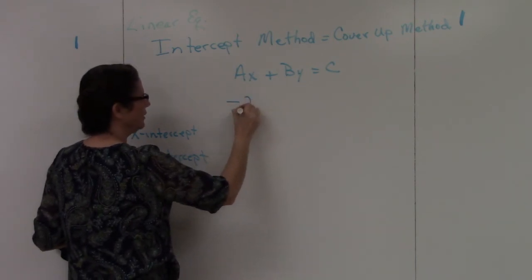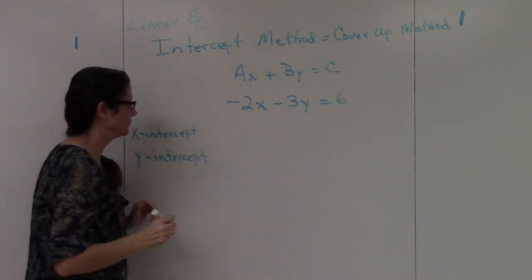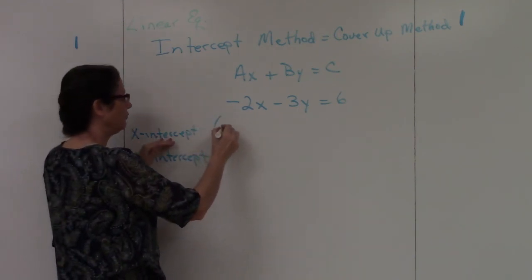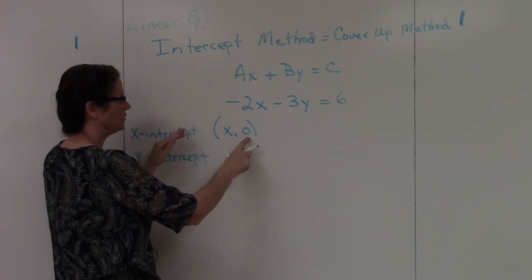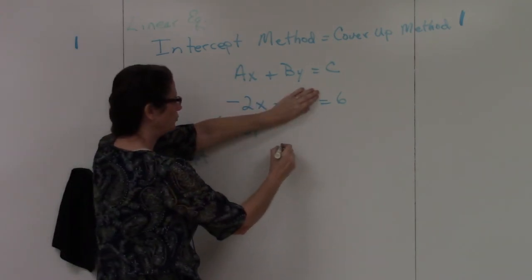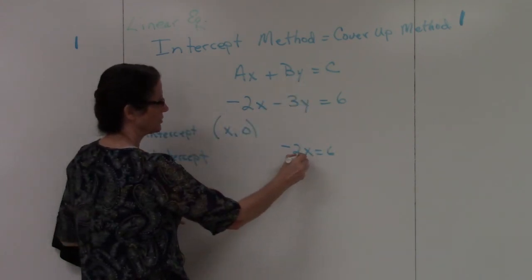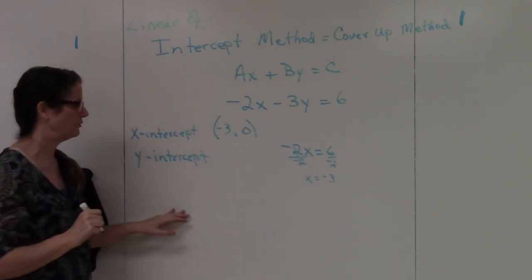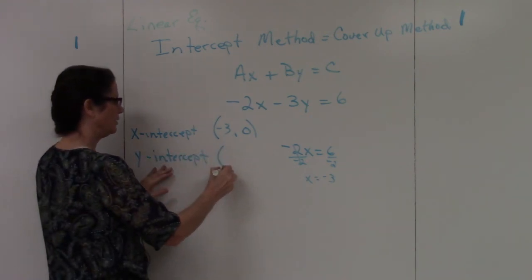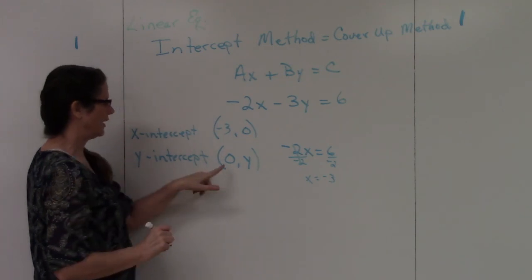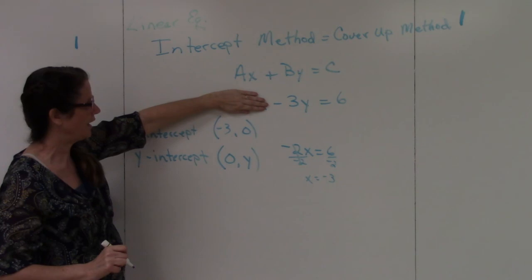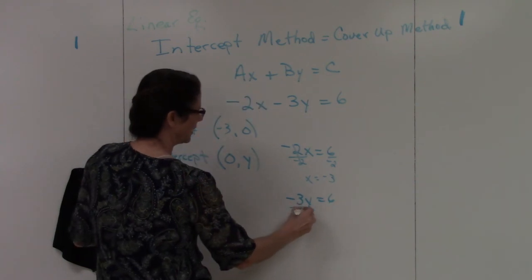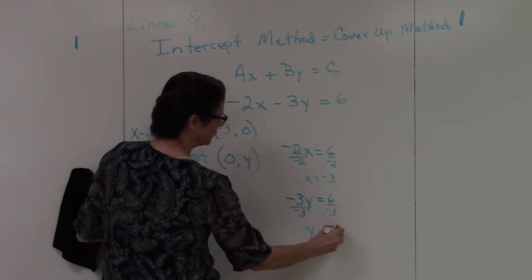Let's say we have negative 2x minus 3y equals 6. For the x-intercept, y is zero, so I cover up the y term and get negative 2x equals 6. Dividing both sides by negative 2 gives x equals negative 3. For the y-intercept, x is zero, so I cover up the x term and the equation left is negative 3y equals 6.